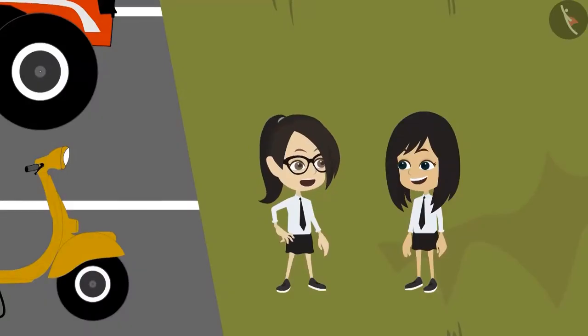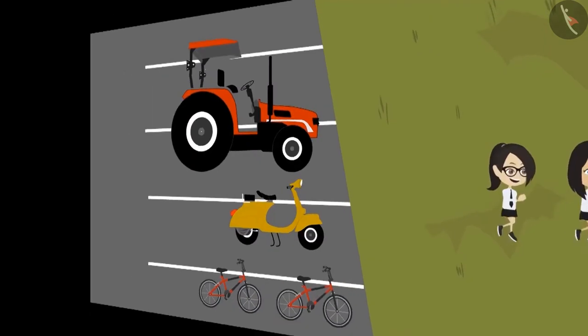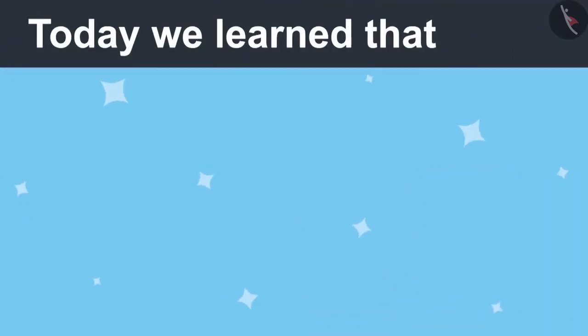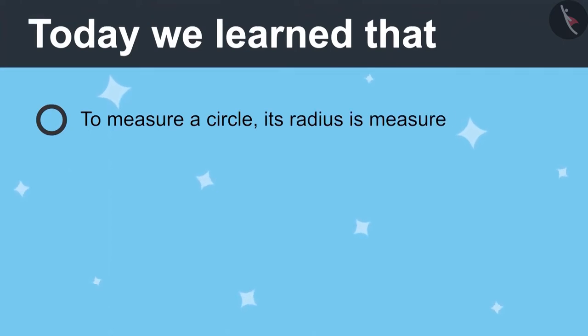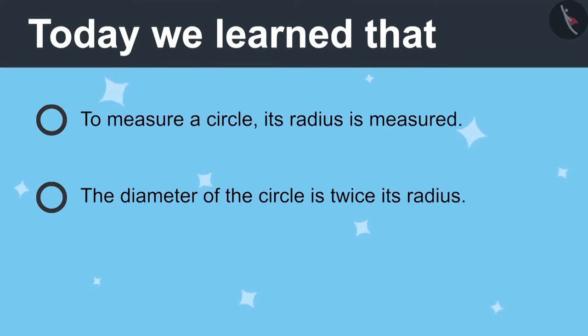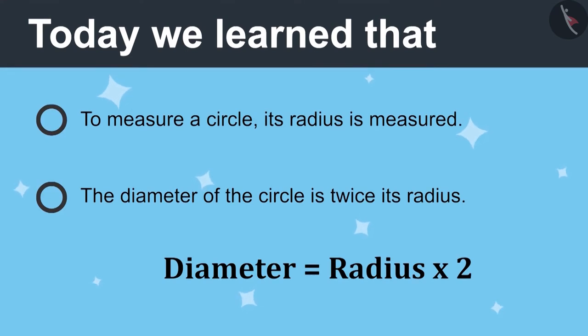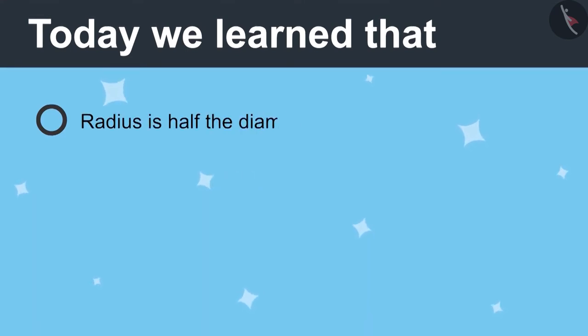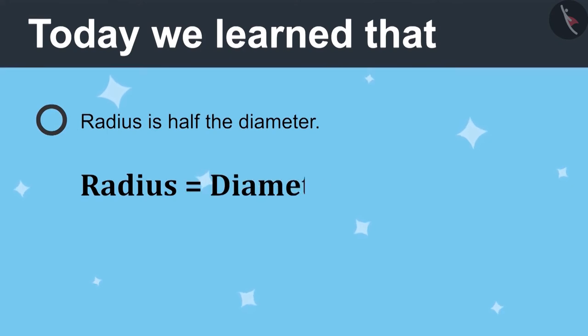We took the measurement of all the wheels and now let us tell sir. So, let's go. Today we learned to measure a circle, its radius is measured. The diameter of the circle is twice its radius. Diameter is equal to radius multiplied by 2. Radius is half the diameter. Radius is equal to diameter divided by 2.